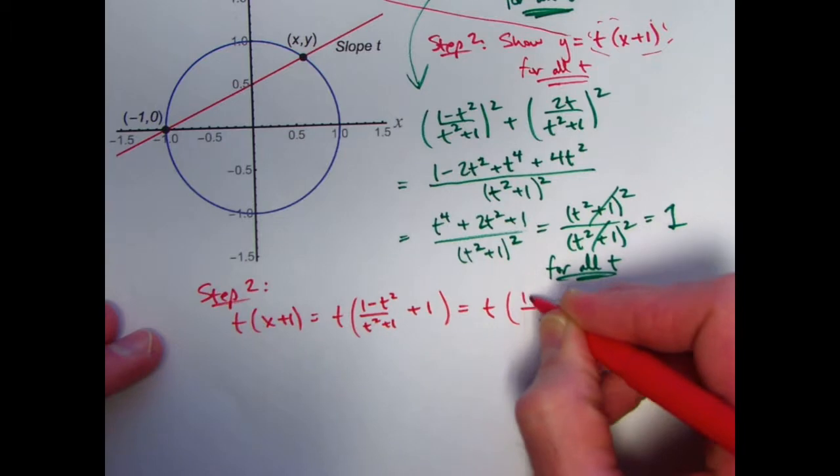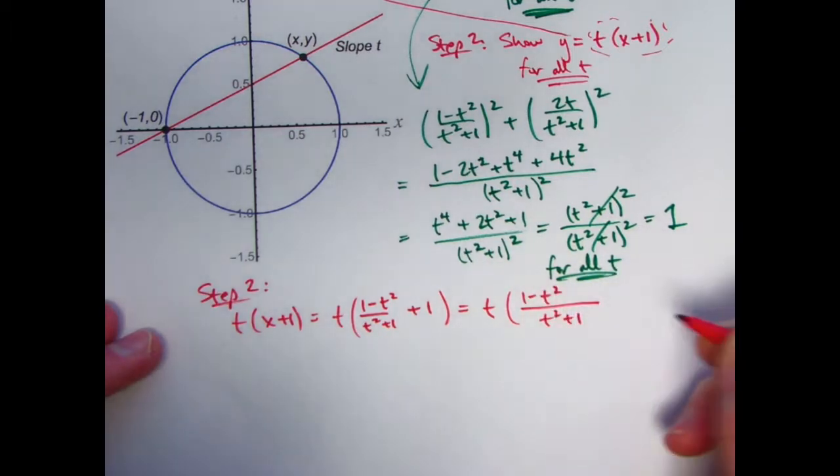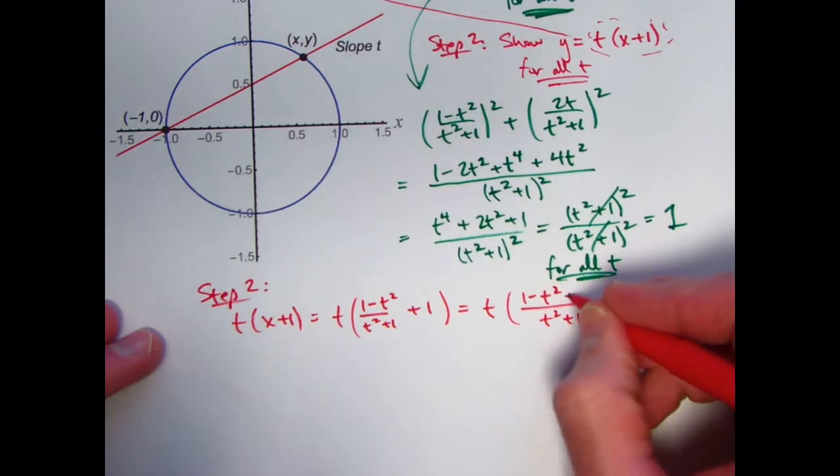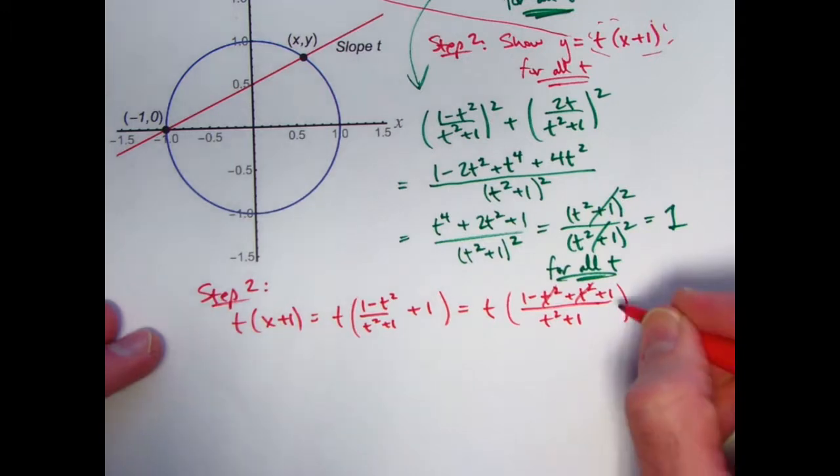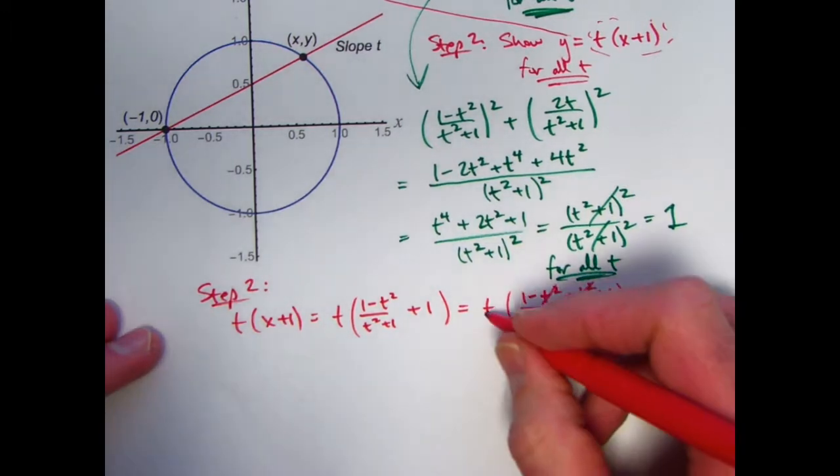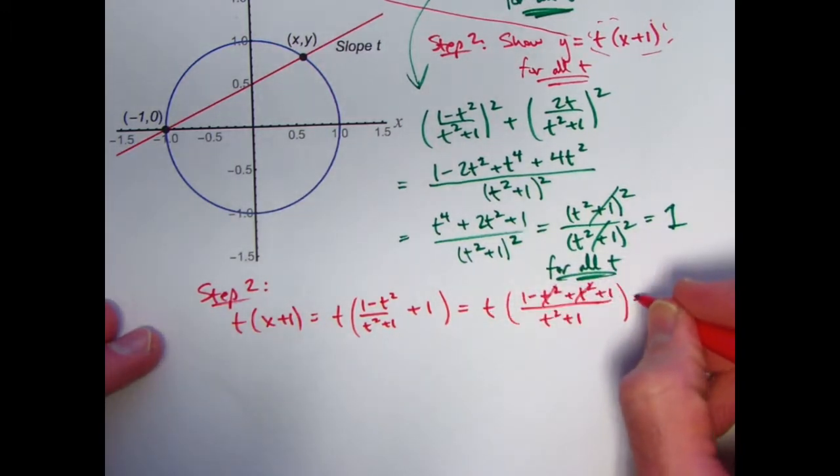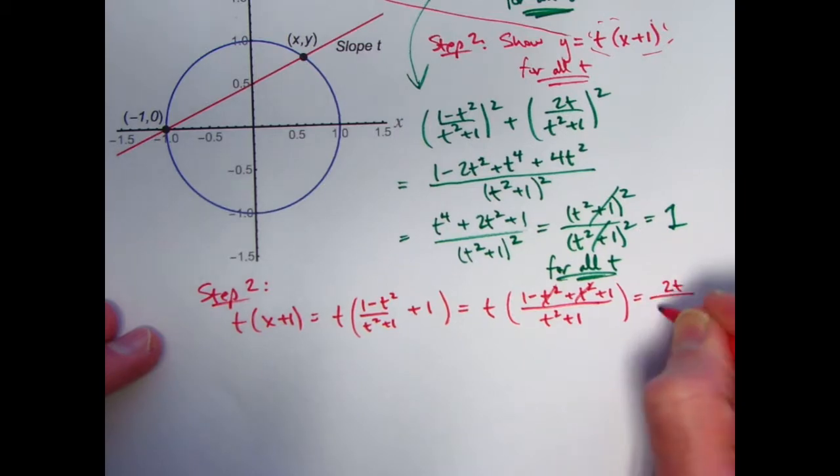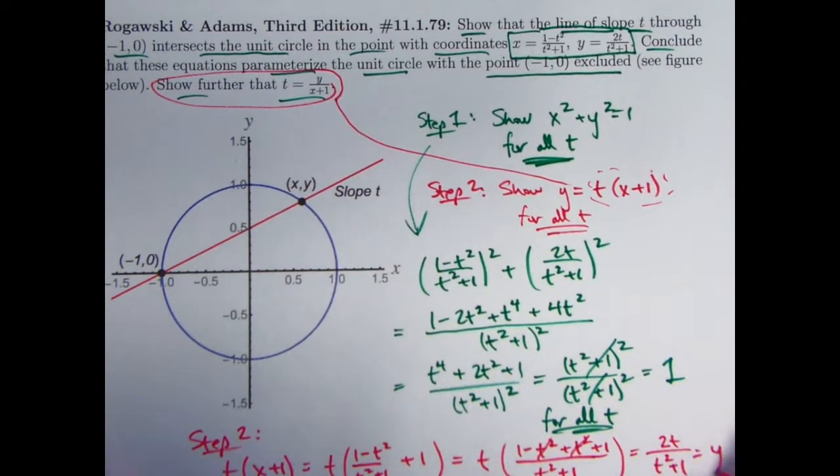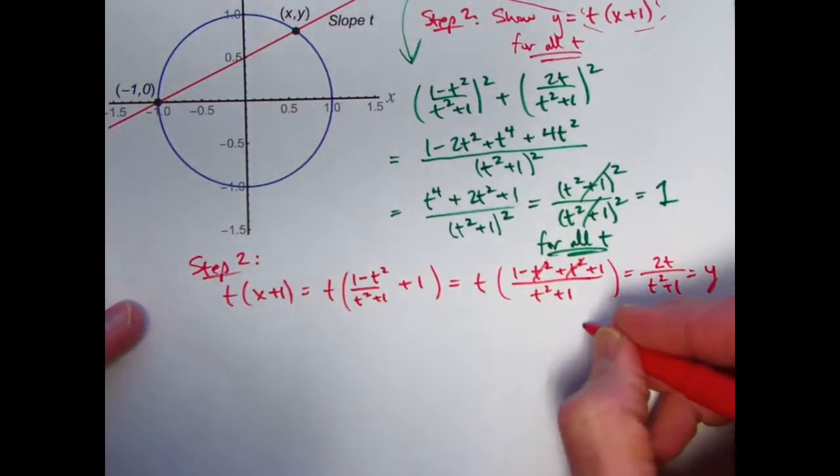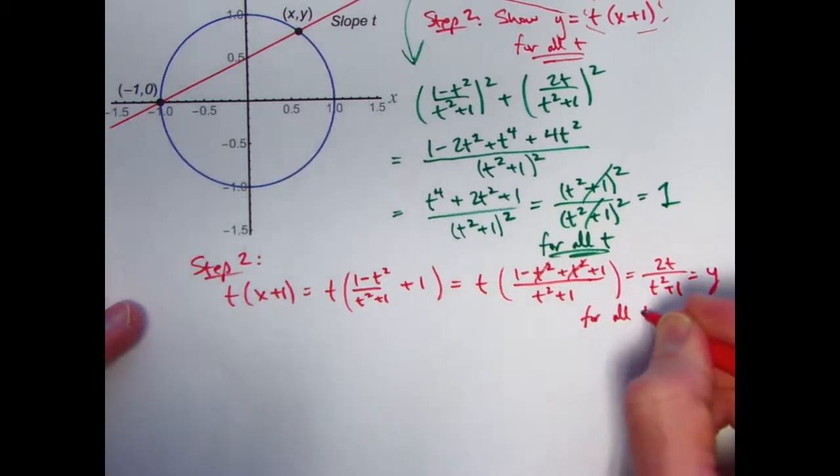Don't forget the +1 there. Now I need to add those things, getting a common denominator of t²+1. This one already has that denominator, so I just have 1-t². And then 1 would be the same as (t²+1)/(t²+1). So I need to add t²+1 up there. The t² cancel. 1+1 is 2. This t can be brought up in the top so that you do get 2t/(t²+1), which lo and behold is the same as what y is. This is y for all t.